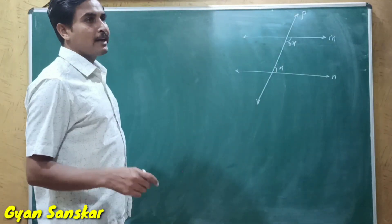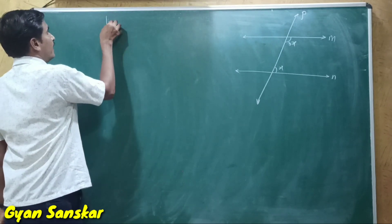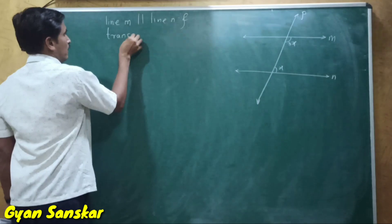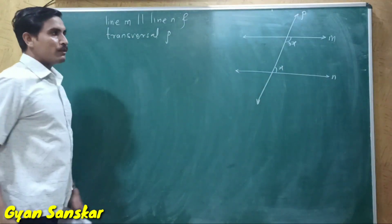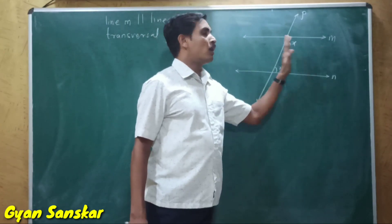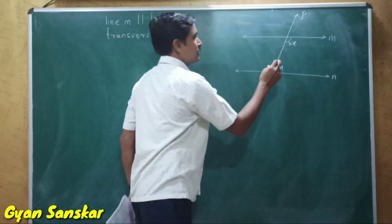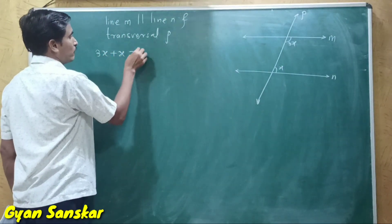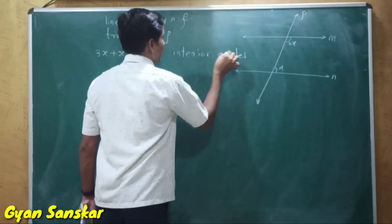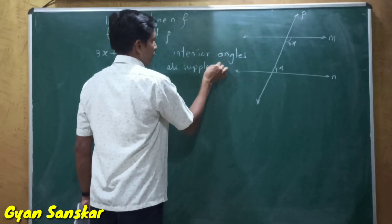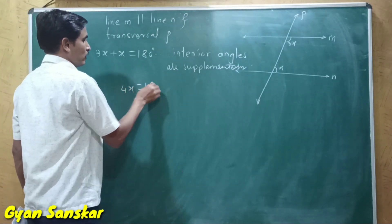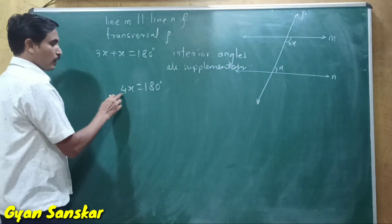We know that interior angles are supplementary. We can write: line yam is parallel to line yam and transversal P. Because of these two parallel lines and the transversal, we have got two interior angles on the right side of the transversal. So 3x plus x is equal to 180 degrees, because interior angles are supplementary.